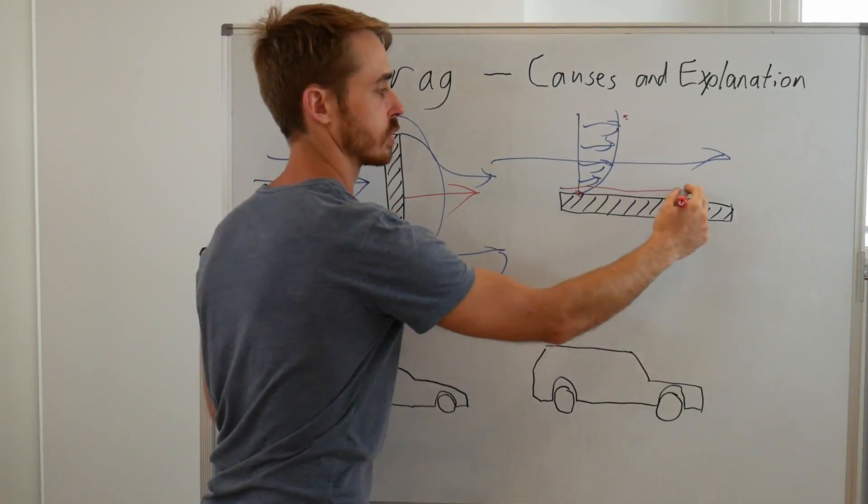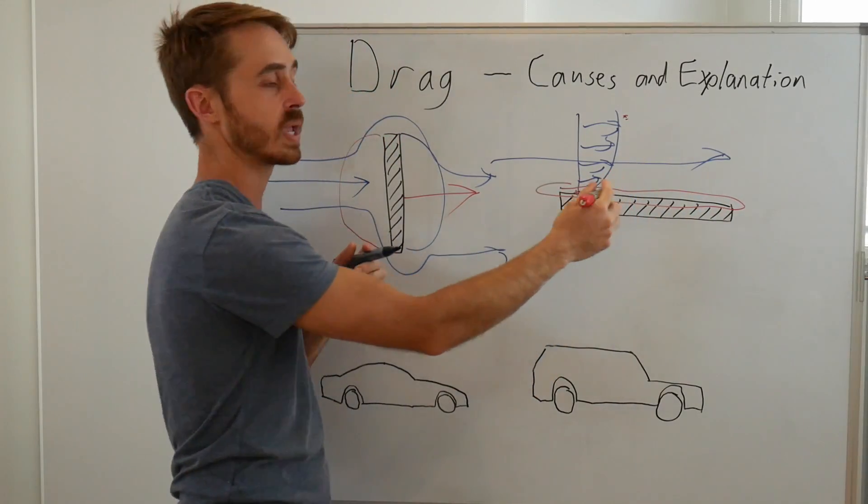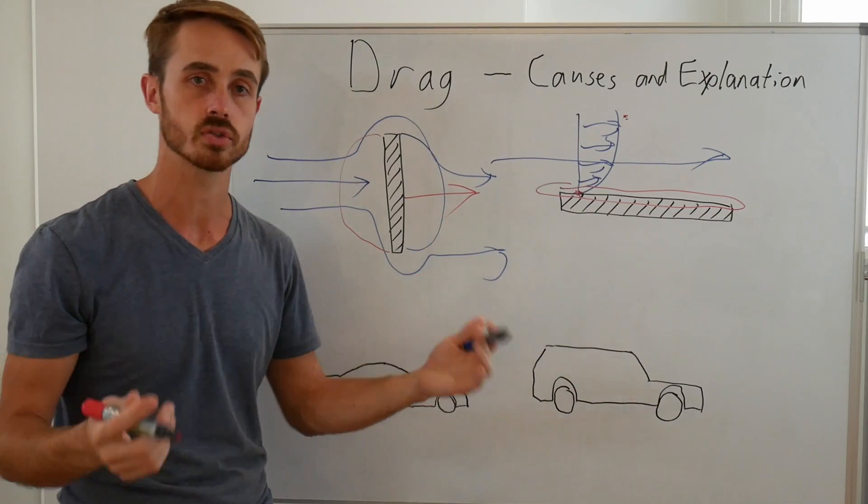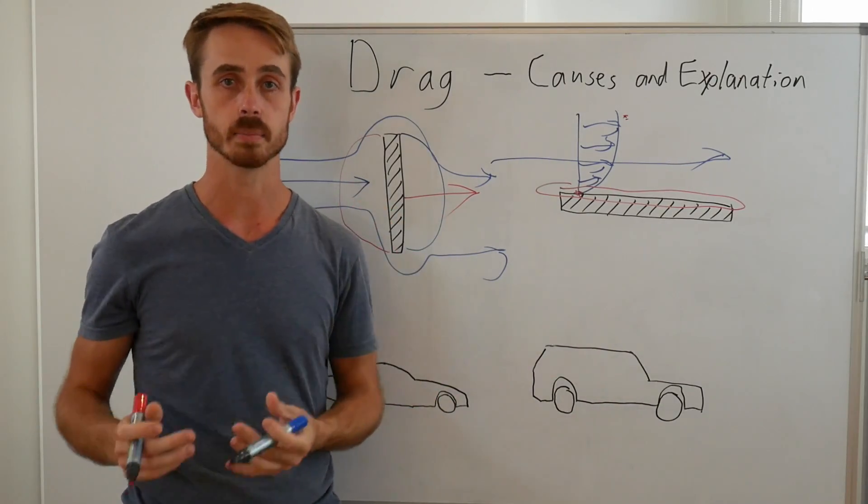Now this means that across this entire surface along here we end up with a shear force on there. Now that's our viscous drag, so these are our two drag components.